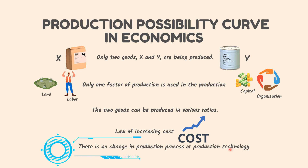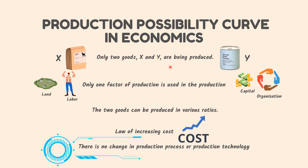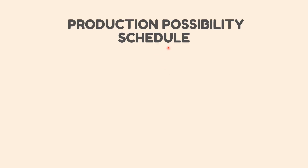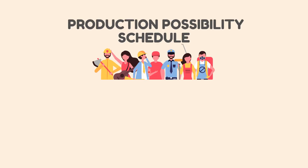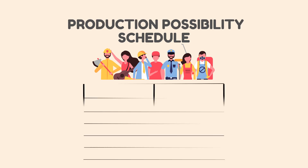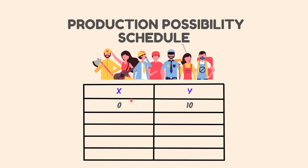With the help of these assumptions we can explain how the production possibility curve can be obtained. Suppose the country can produce different alternative combinations of X and Y with its given amount of labor. Those combinations are shown with the help of the following hypothetical schedule. When the country doesn't produce any X, it can use all its resources to produce Y.